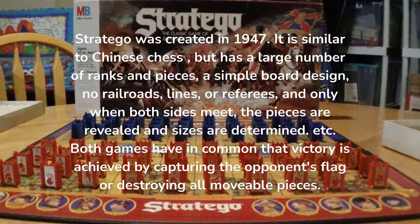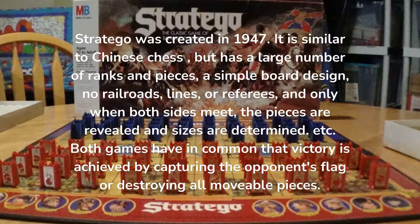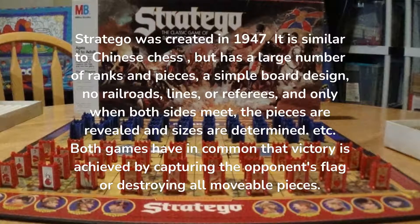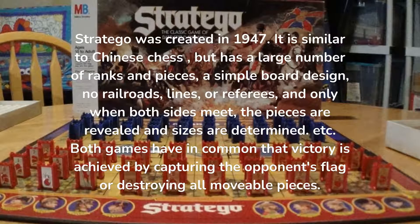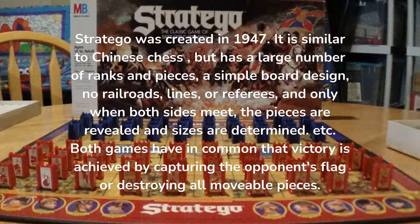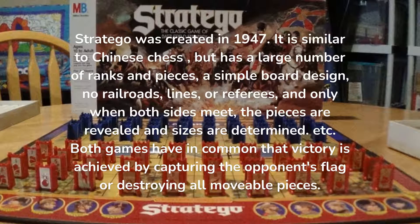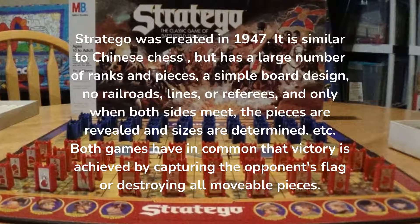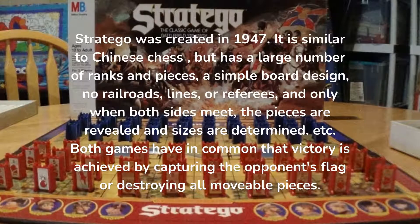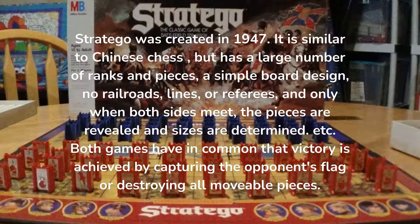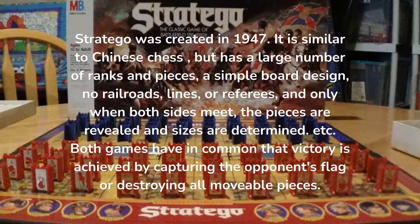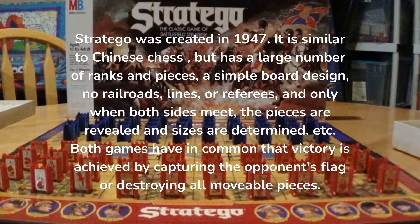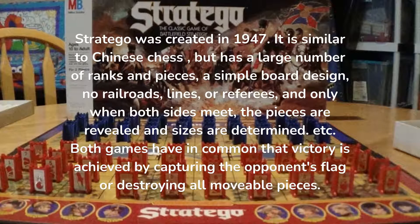Stratego was created in 1947. It is similar to Chinese chess but has a large number of ranks and pieces, a simple board design, no railroads, lines, or referees, and only when both sides meet, the pieces are revealed and sizes are determined. Both games have in common that victory is achieved by capturing the opponent's flag or destroying all movable pieces.